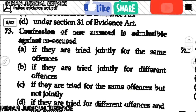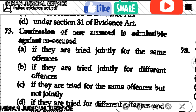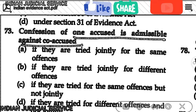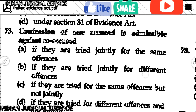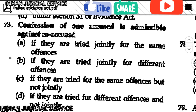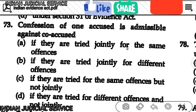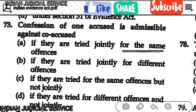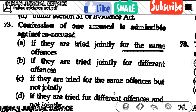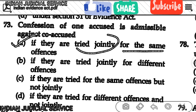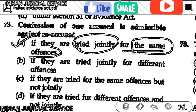Question number 73: The confession of one accused is admissible against a co-accused if they are tried jointly for the same offence. Option A is correct. The keywords here are 'jointly tried' and 'same offence' — both conditions must be satisfied.